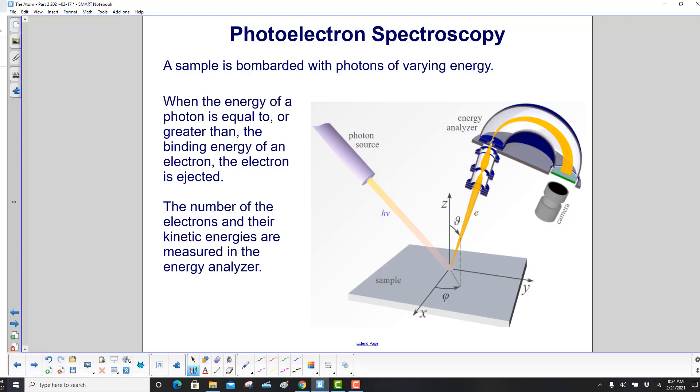Here's our picture again, and we're bombarding this sample with photons of varying energy. When the energy of one of these photons is equal to or greater than the binding energy of an electron, the electron is ejected. The number of the electrons and their kinetic energies are measured in the energy analyzer.